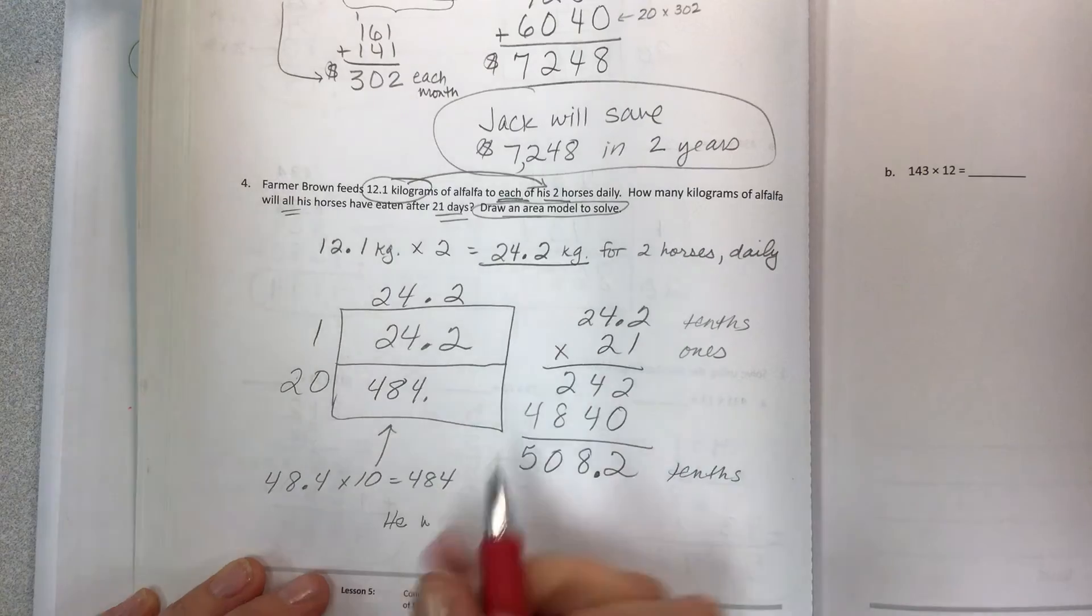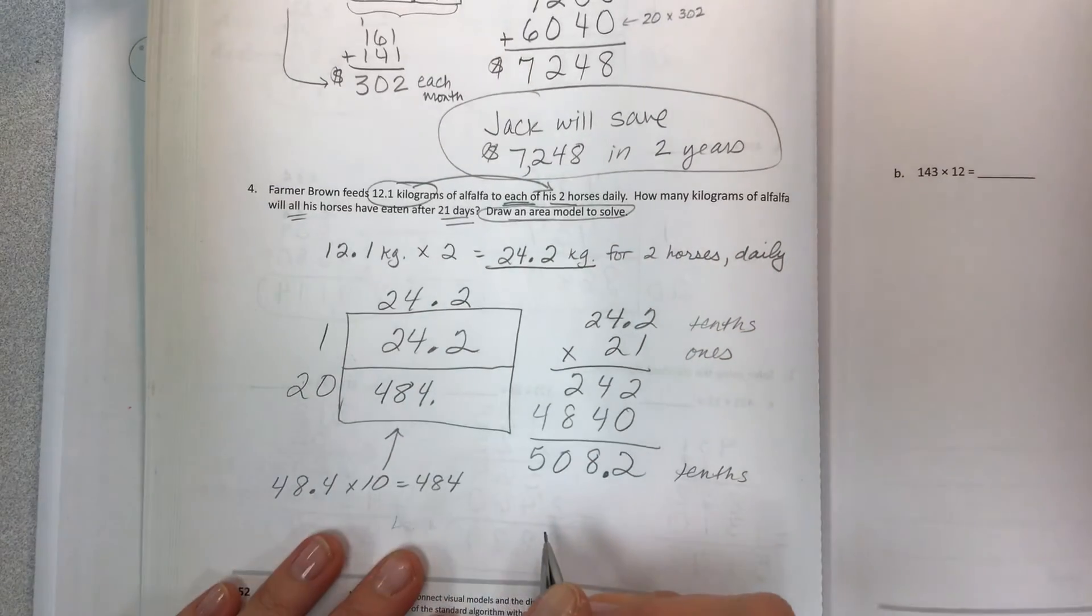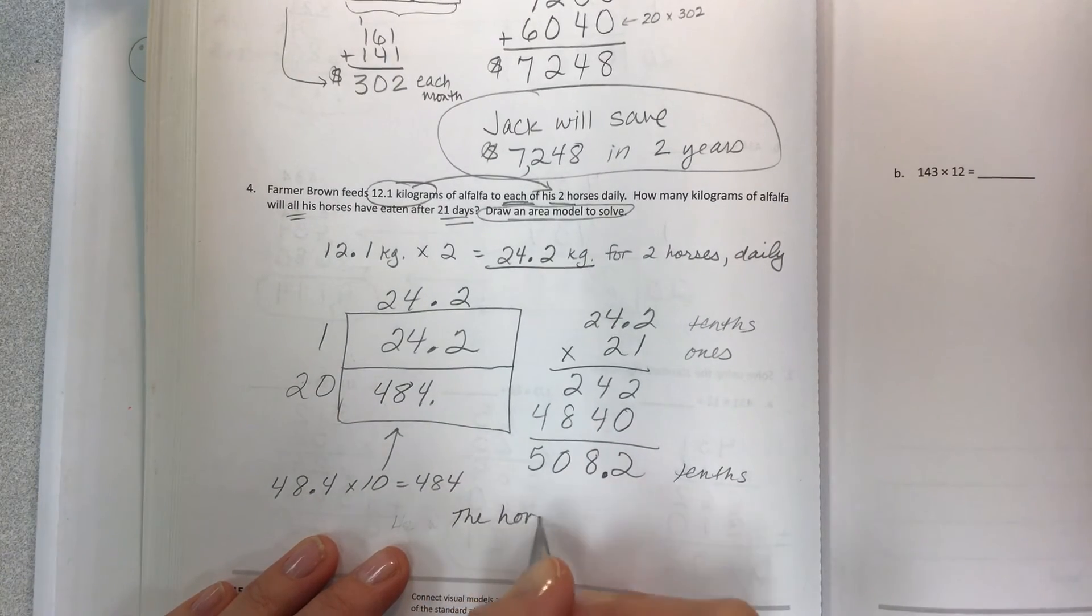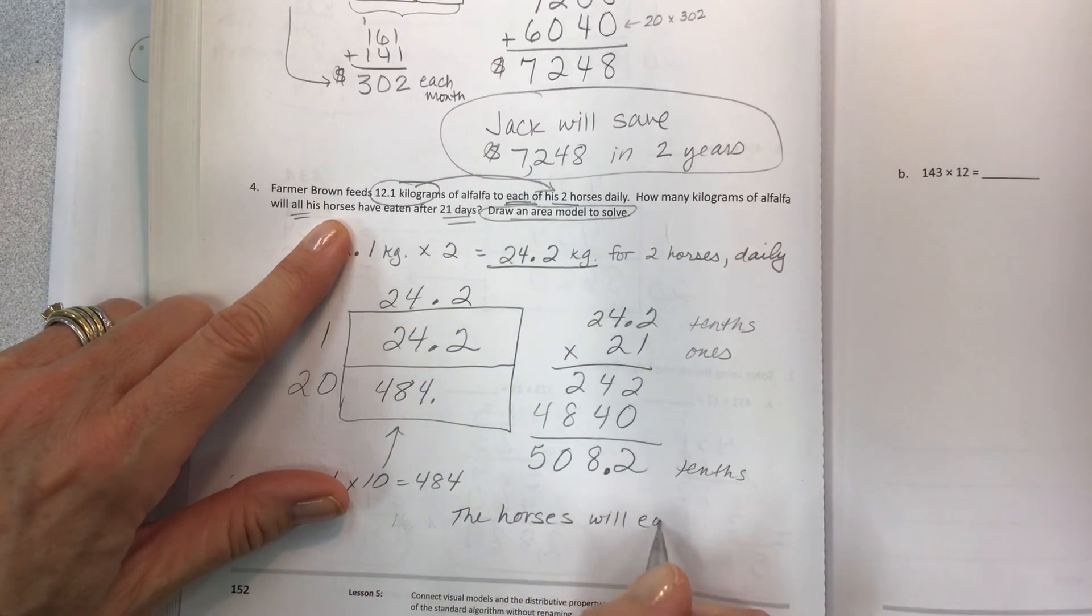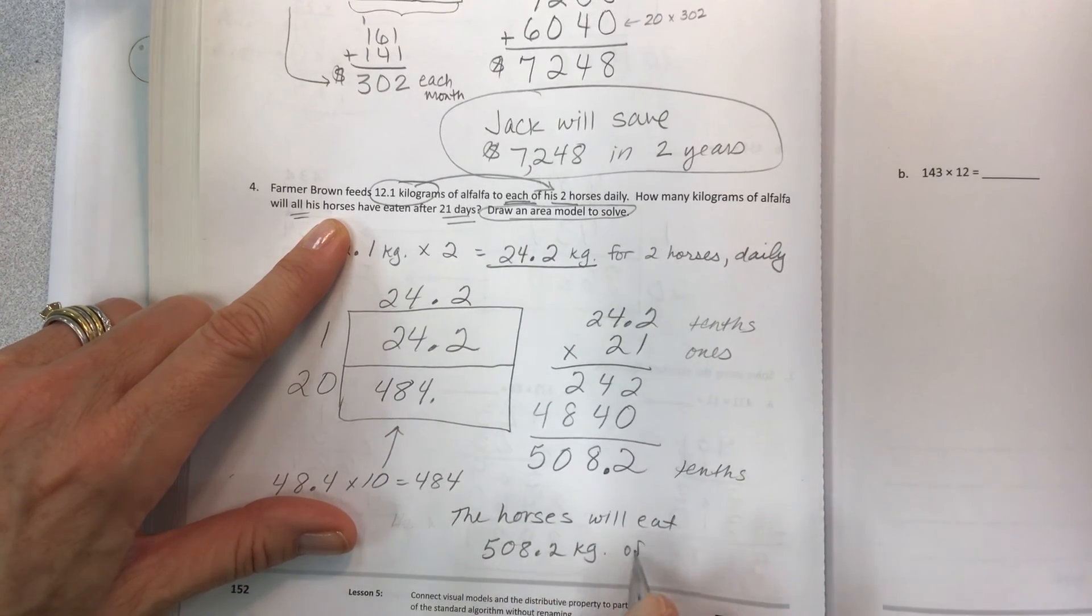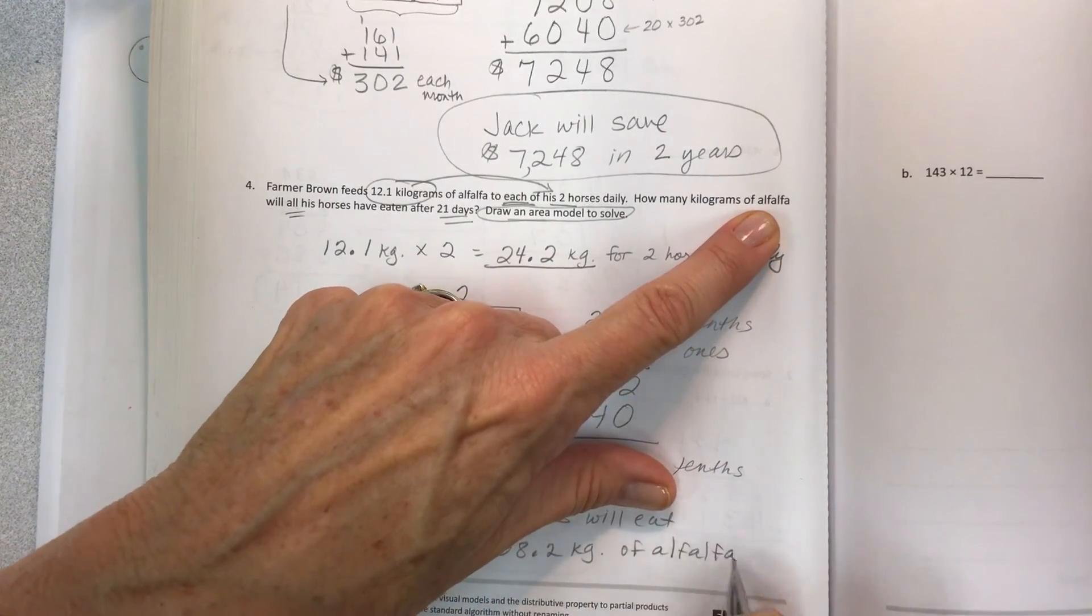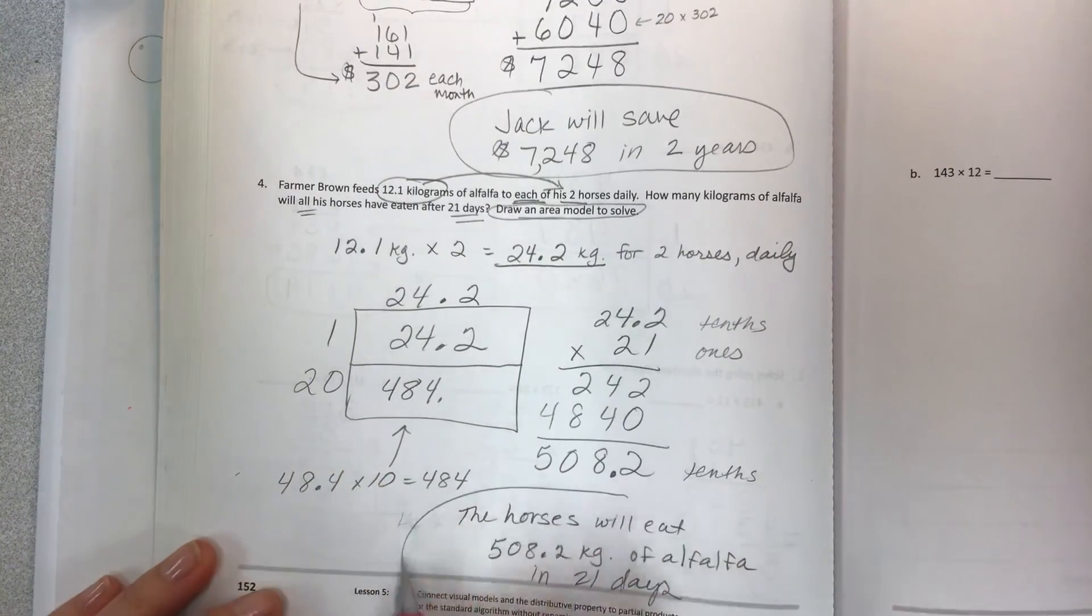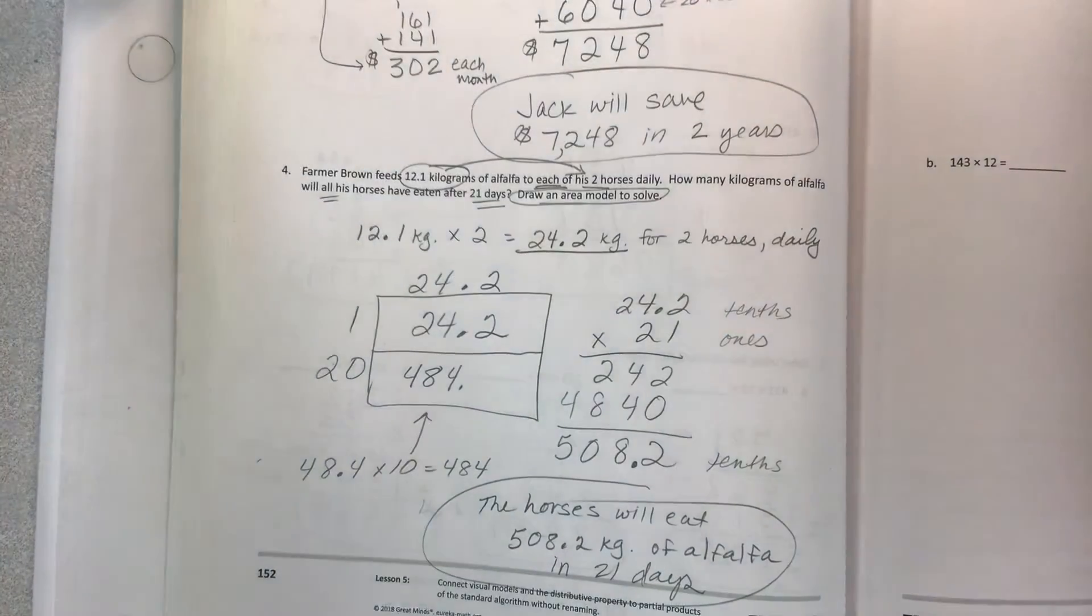And then we write our final answer with our label. The horses will eat 508.2 kilograms of alfalfa in 21 days. There you go. Hope that was helpful. And we will see you on the next video. Take care. Bye now.